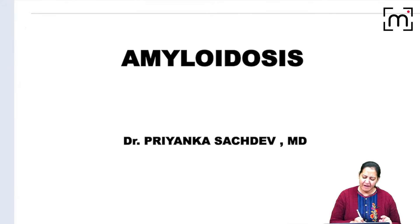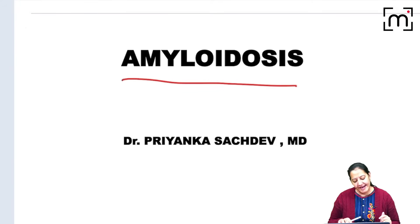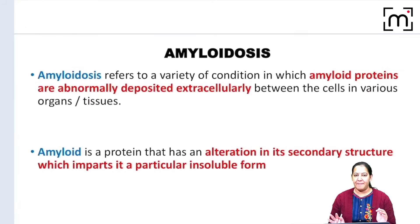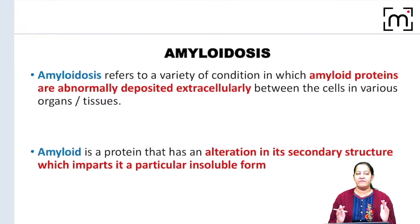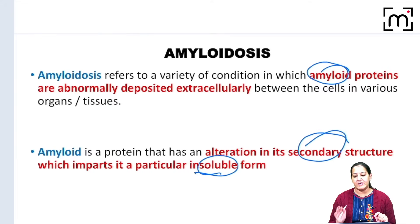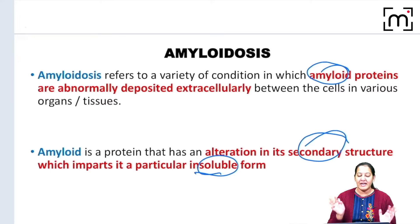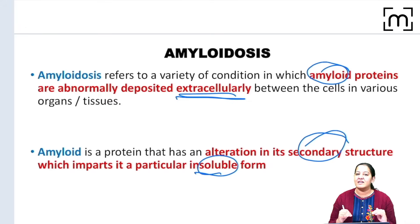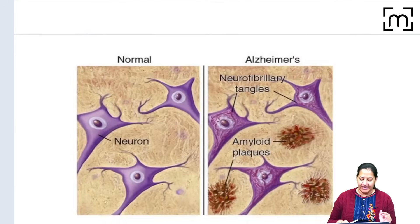In this session I'm going to discuss amyloidosis. Before understanding the pathogenesis, you must understand the definition. Amyloidosis is a disease in which, in some individuals, an abnormal protein is formed called amyloid. Amyloid is not a normal protein — it is insoluble due to a problem in its secondary structure, because of which it gets deposited extracellularly, compressing cells in multiple human organs and causing organ failure.